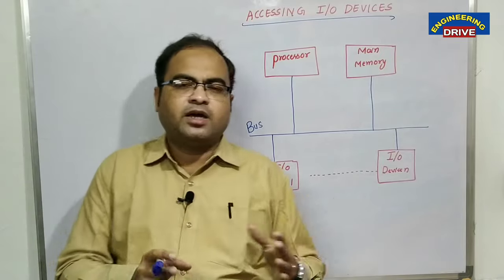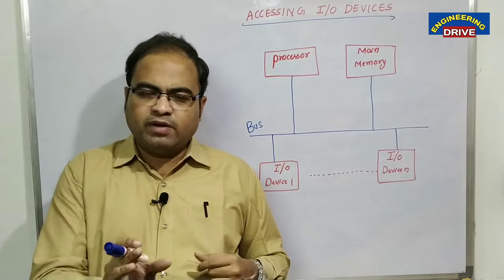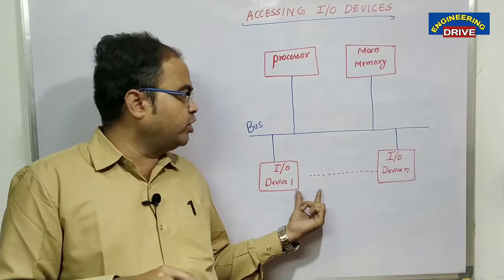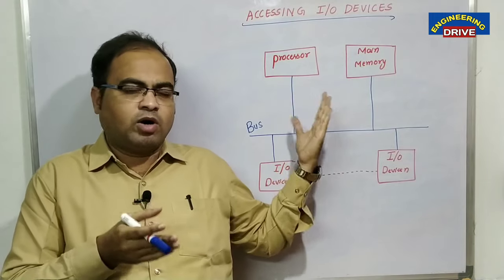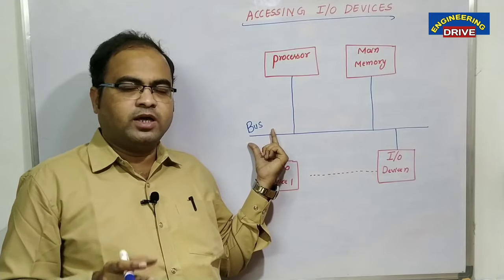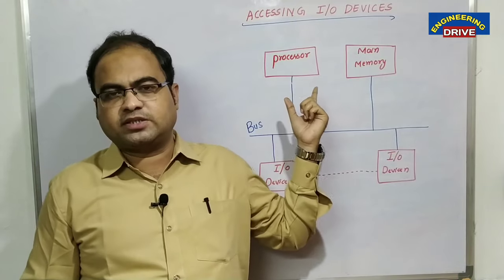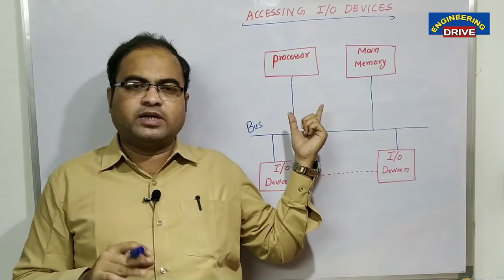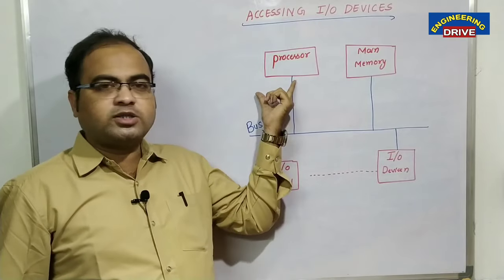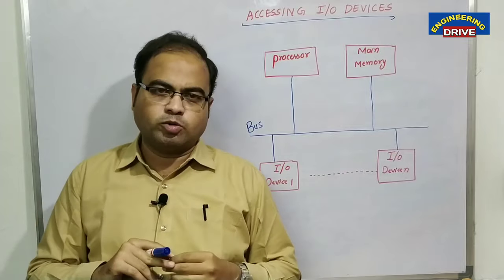Let us say a user wants to communicate with the computer using a mouse. Mouse is an input device. Whenever a user uses a mouse, the request will be passed from the input device to the processor with the help of a bus. The processor will then grant permission to the input device to open a particular program available in main memory, so the processor then accesses main memory and the program opens.